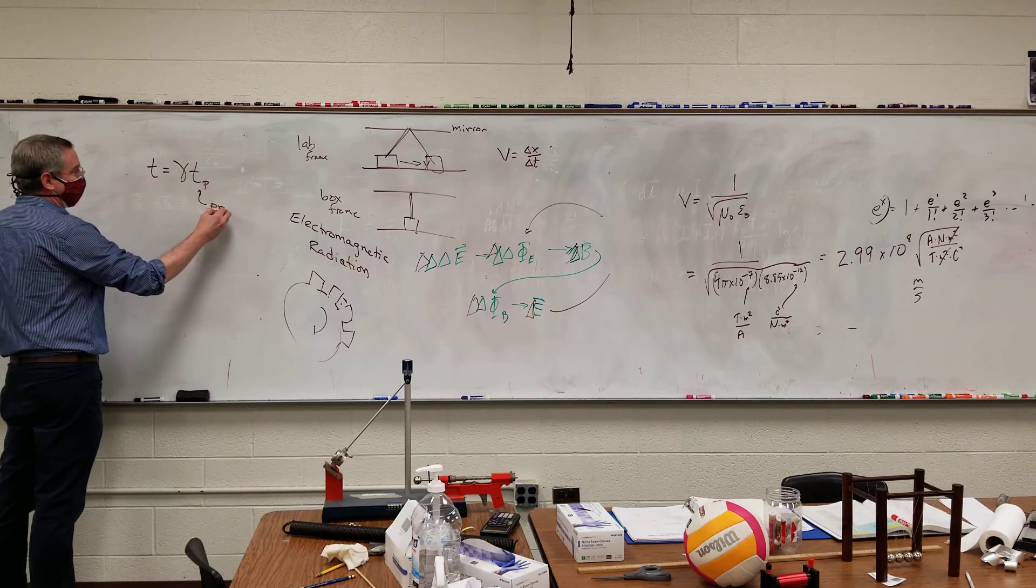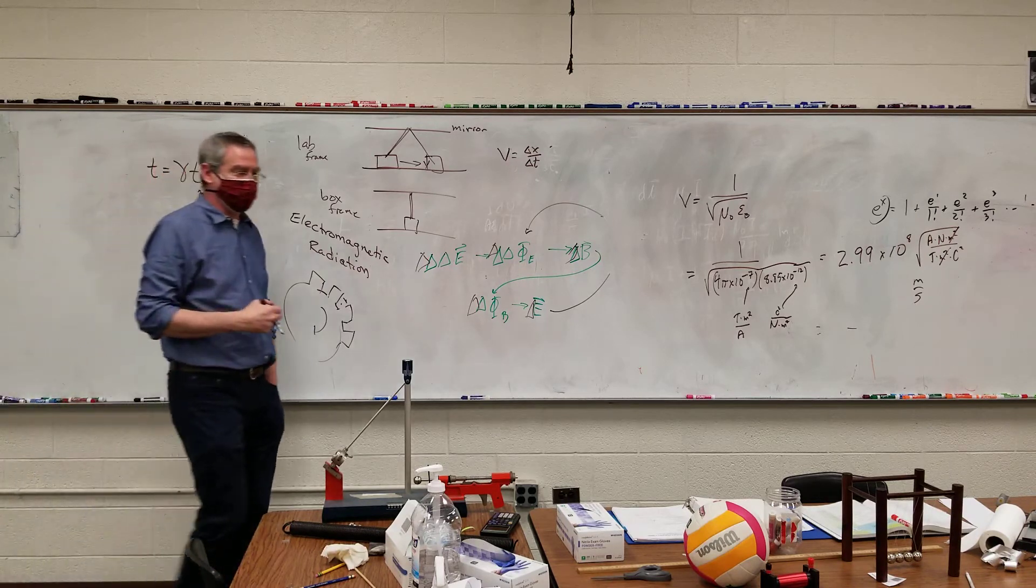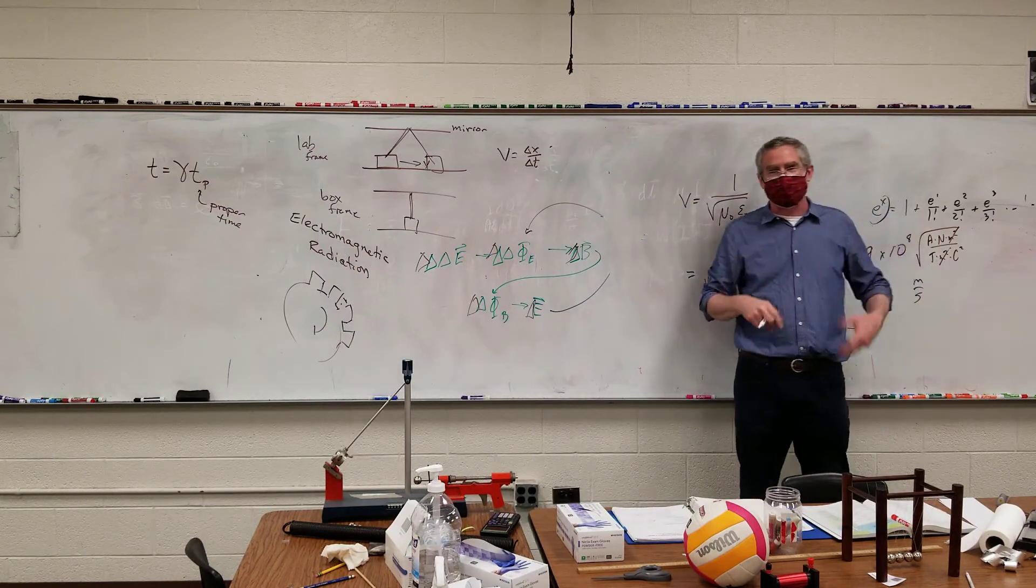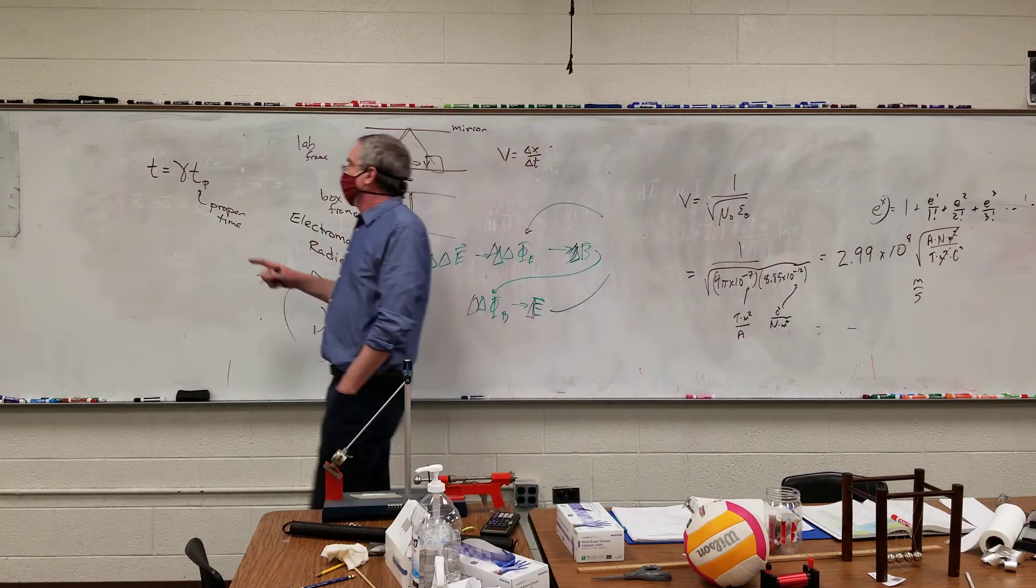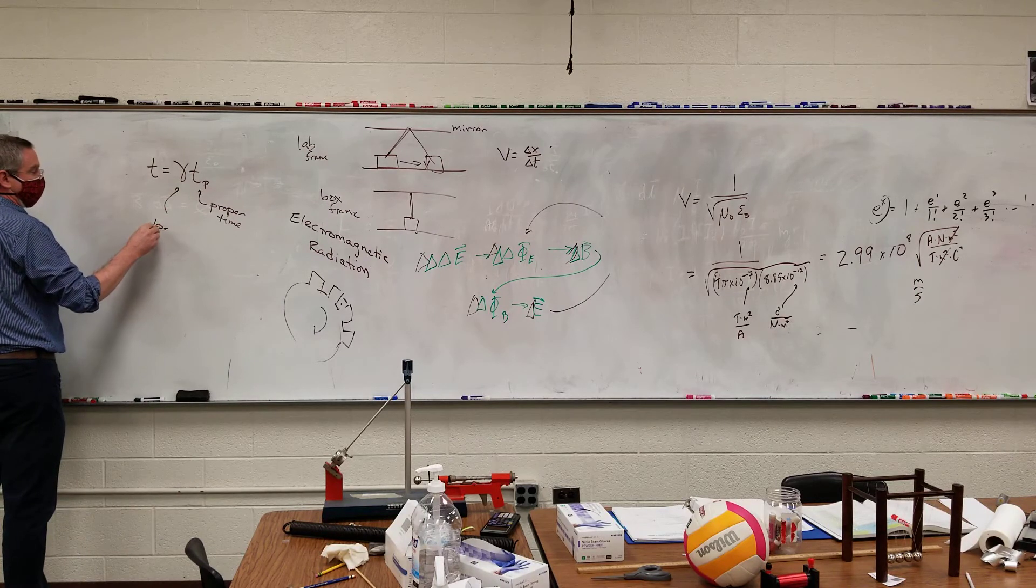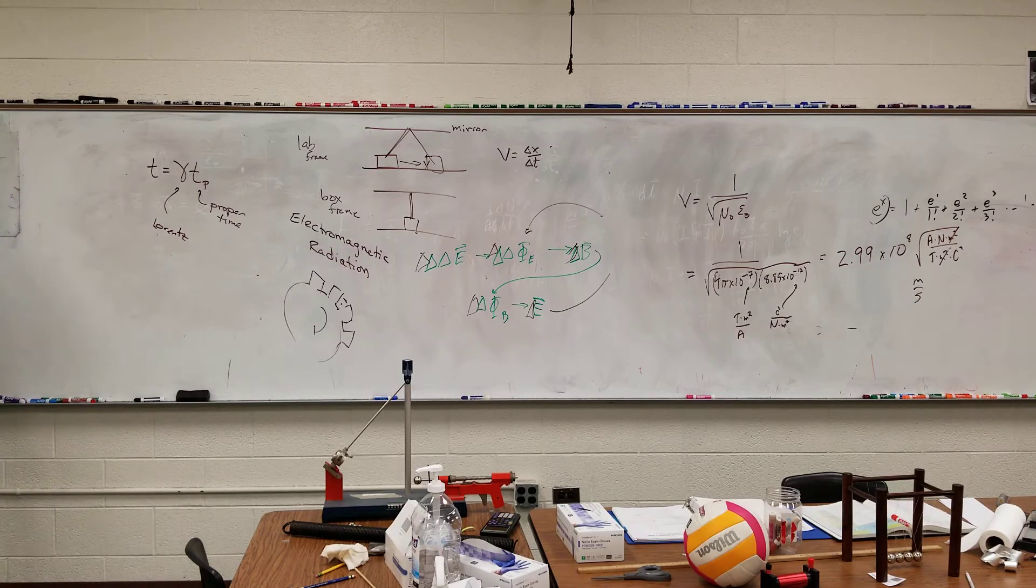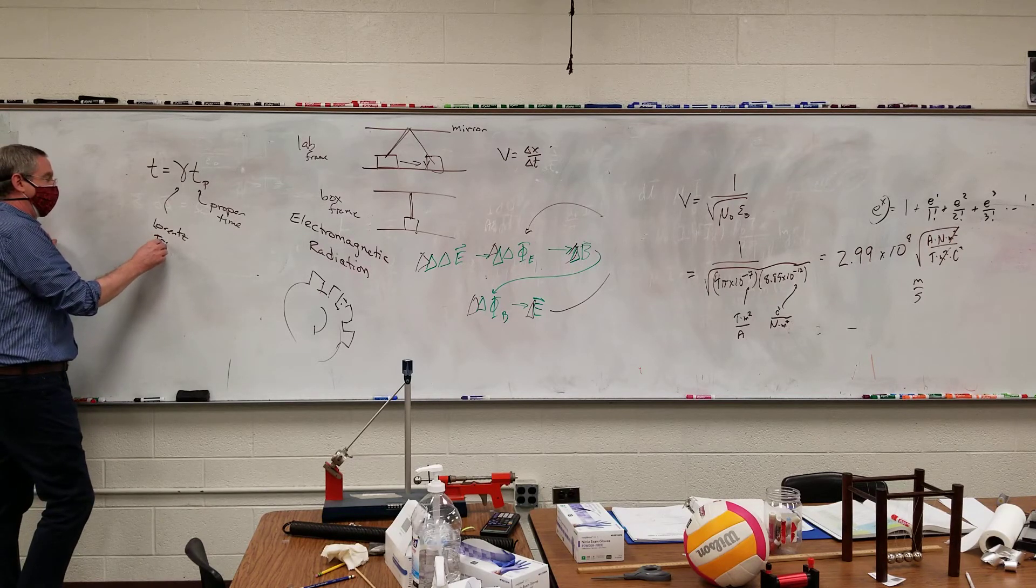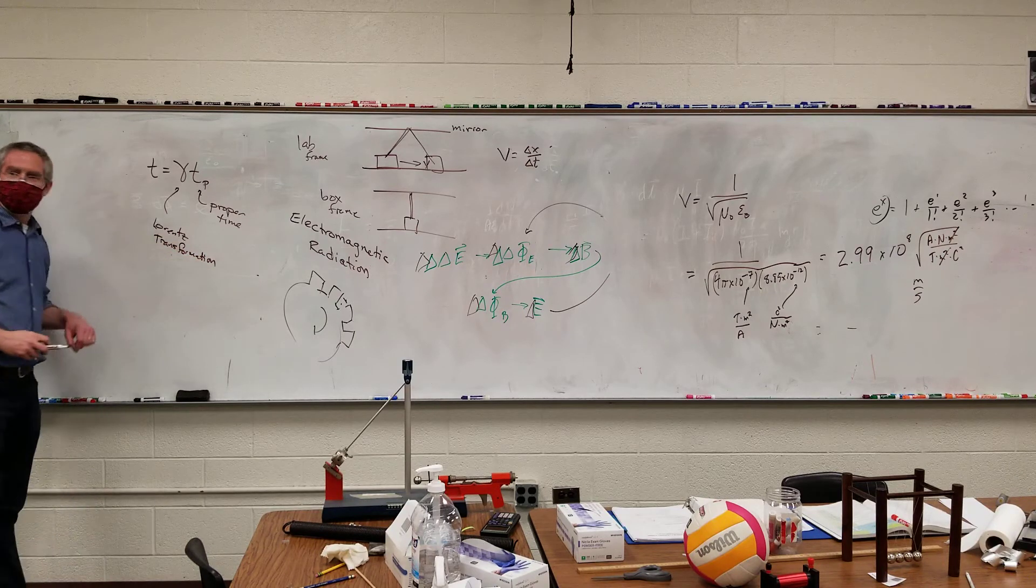That pretty much says it all right there. This P right here stands for proper time. My proper time is if I had a watch out and I started it and 10 seconds passed by, that's my proper time. It's not yours, it's mine. This symbol in front of it - this is known as the Lorentz transformation. The guy who wanted to show that Maxwell was wrong.